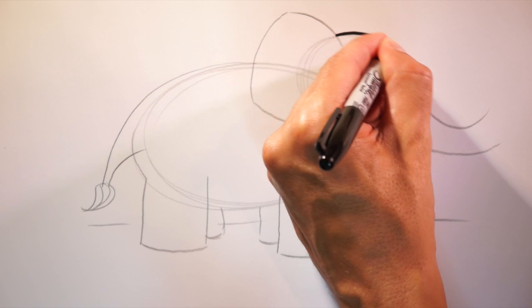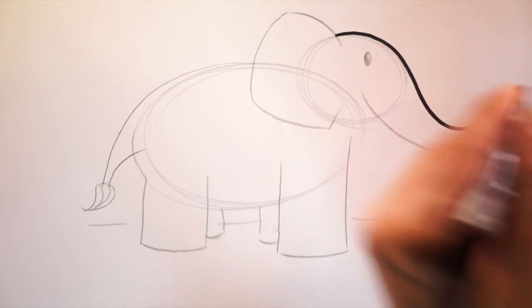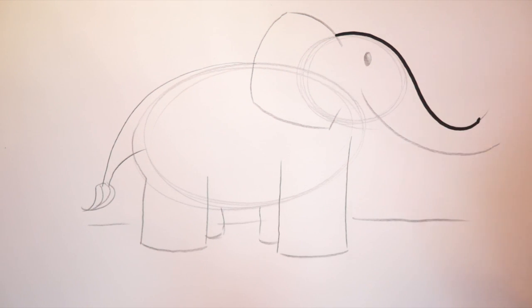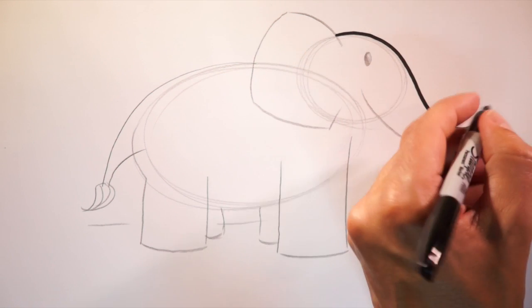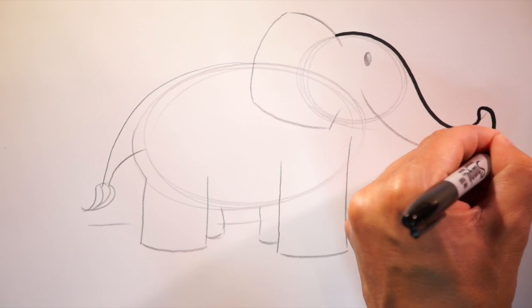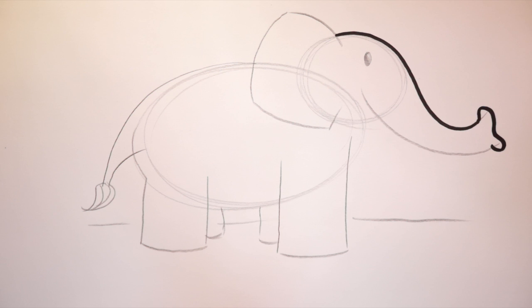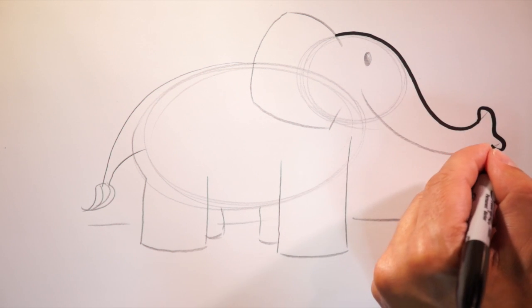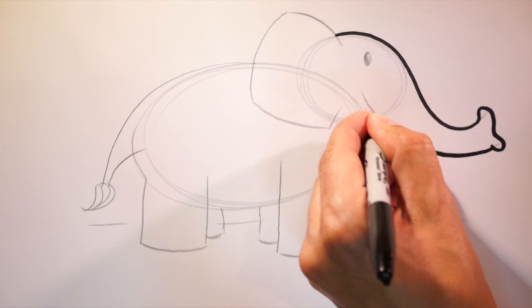Okay. Like this. Now, elephant experts say that an elephant has fingers at the end of their trunk. So let's draw them in like this. And then back up towards the head. Great!